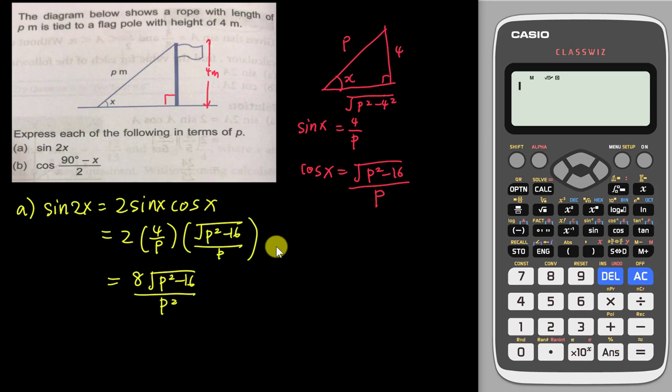All right, it's quite simple. The difficult one will be part b. It's not very difficult but it will be just slightly different. So if I want to find b, it's about cos(90 - x)/2. All right, so what I want to do now is I have two options here.